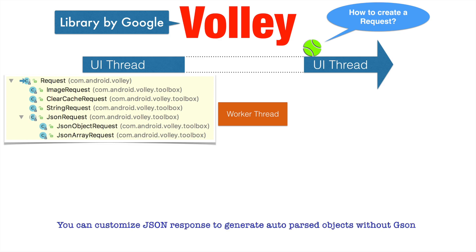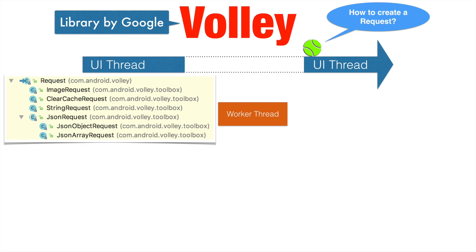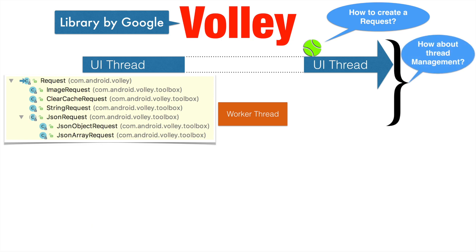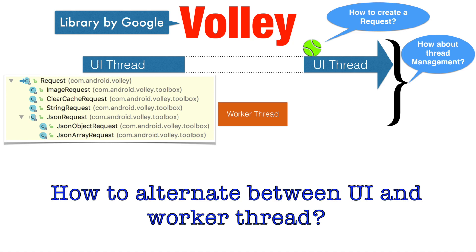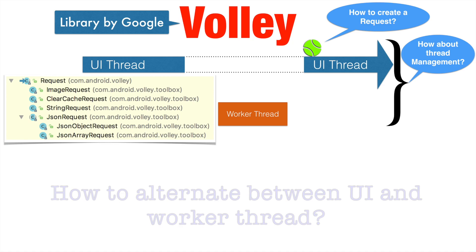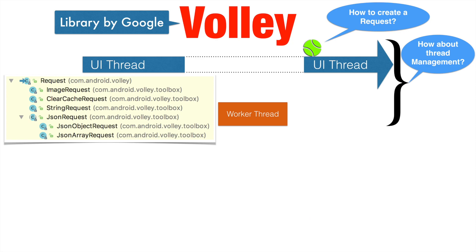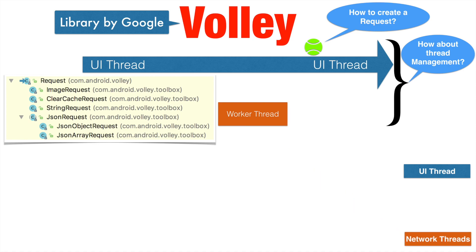So this answers the question about how to deal with the request, but another question still persists: what about thread management? How are we going to alternate between a UI thread and a worker thread? One thing is for sure that you are basically going to deal with a UI thread and a worker thread, or a group of worker threads.